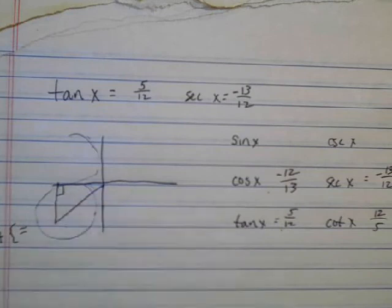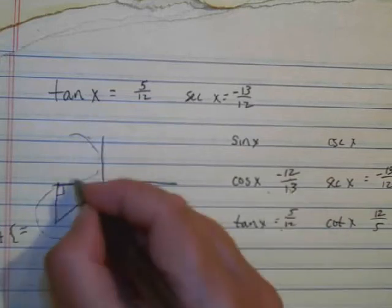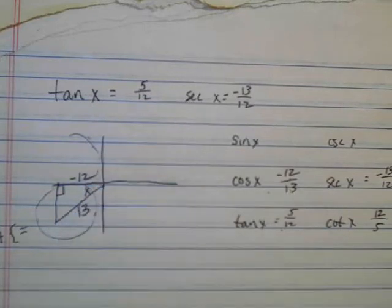Notice I draw the reference angle. There's x. Cosine is negative 12 over 13, so the adjacent is negative 12, and the hypotenuse is 13.